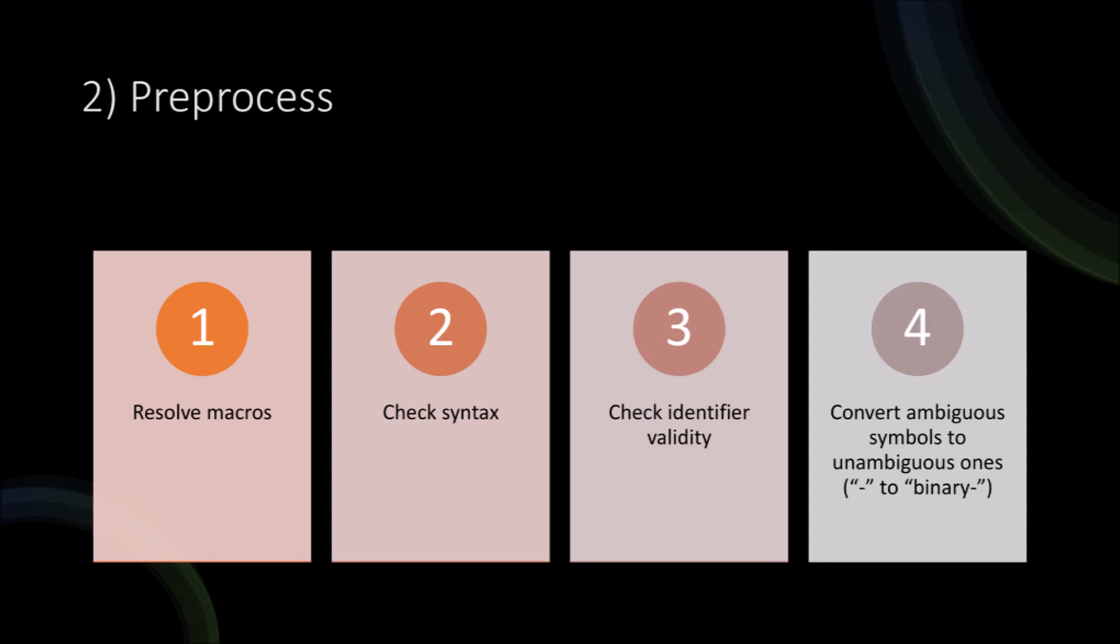We convert ambiguous symbols to unambiguous ones. For example, the minus symbol can either be a binary operand or a unary operand. By binary I mean you have something like 3 minus 5, and that minus symbol applies to both the 3 and the 5. However, if you just had minus 5 by itself, the minus symbol only applies to the 5. That would be a unary minus, and these translate to different assembly code.